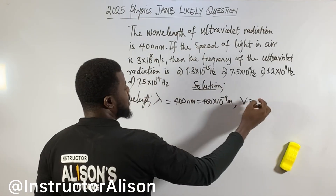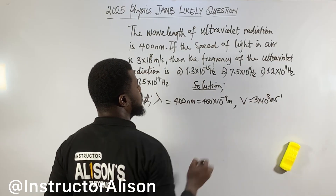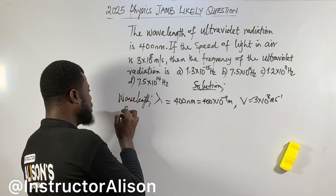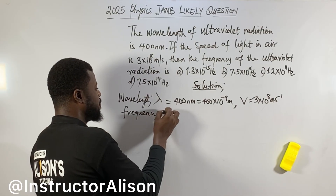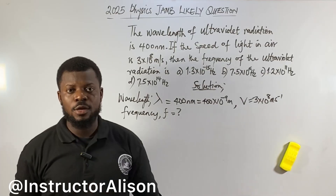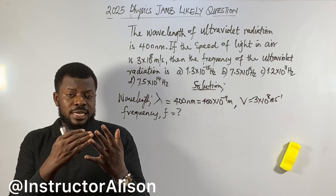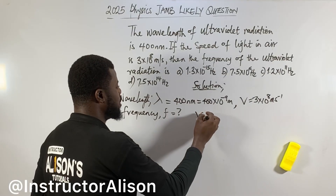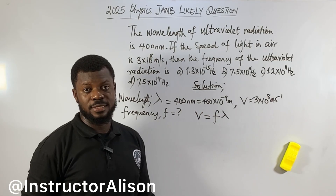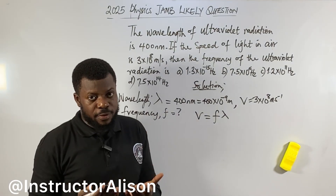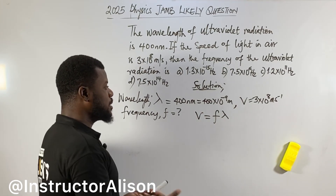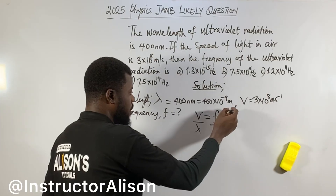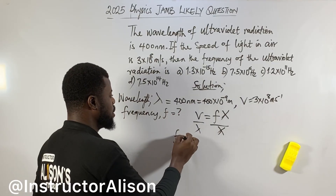So v equals 3 times 10 to the power of 8 meters per second. Then the frequency of the ultraviolet radiation is what we need to find — that means frequency is unknown. Now you think: what is the relationship between frequency, speed of light, and wavelength together? The formula is simple: v equals frequency multiplied by lambda (wavelength). Since we need to find frequency, we rearrange: divide both sides by lambda so that wavelength cancels. Frequency equals v over lambda.